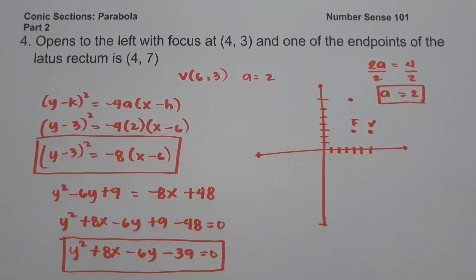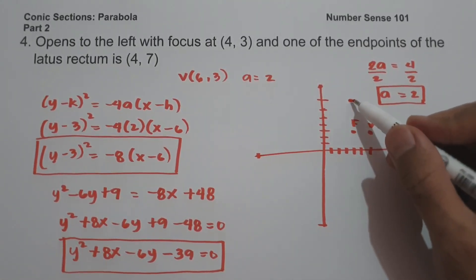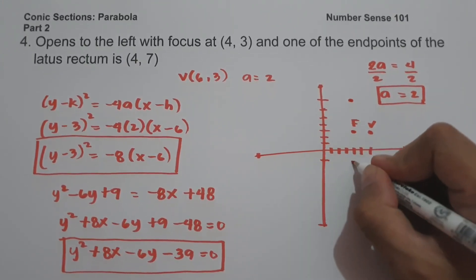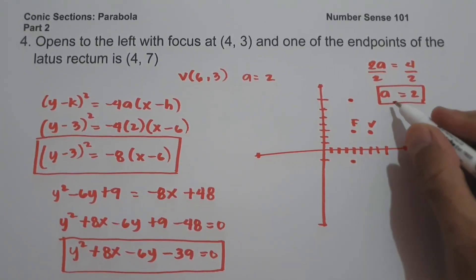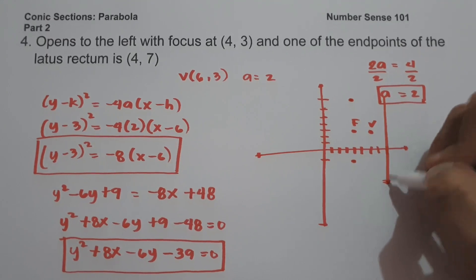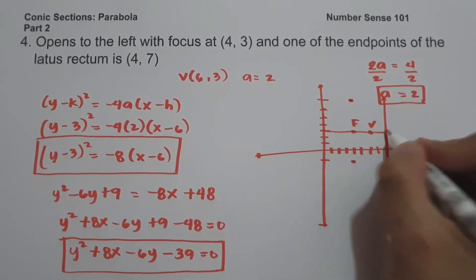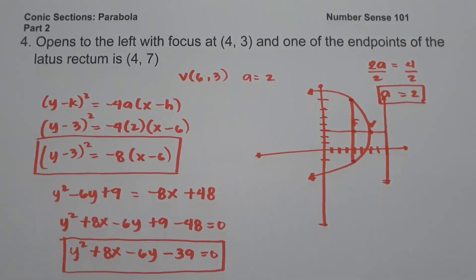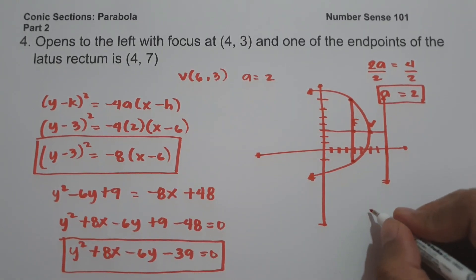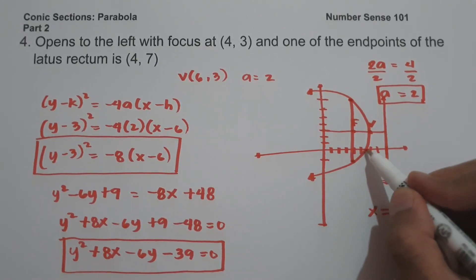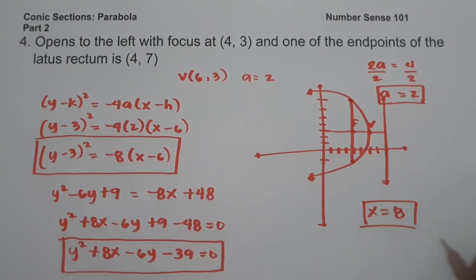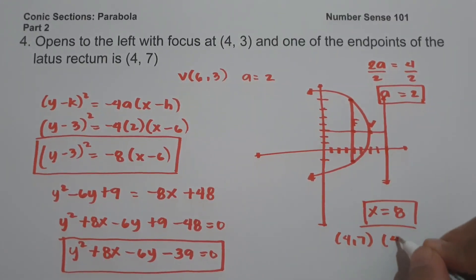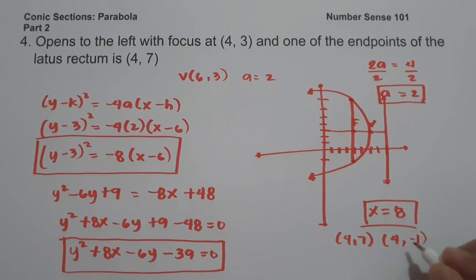To sketch the graph, since the distance between the focus and one of the endpoints of the latus rectum is 4 units, we count 4 units downward from the focus to find the other endpoint. To find the directrix, we count 2 units to the right of the vertex, giving the equation x = 8. The axis of symmetry is drawn. The endpoints of the latus rectum are (4, 7) and (4, −1). This is our answer.